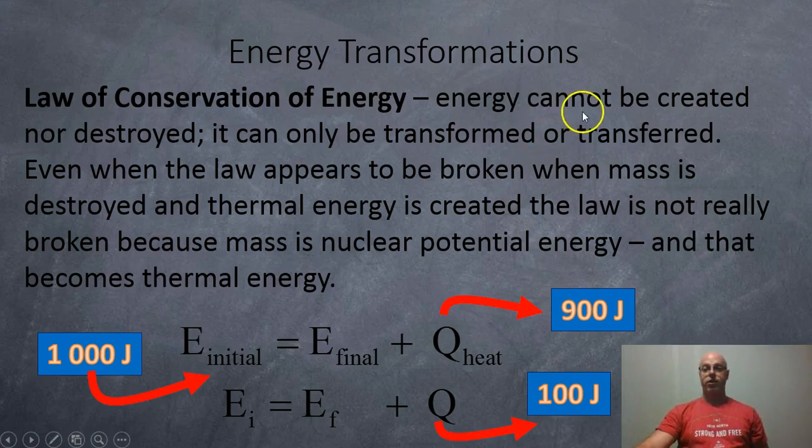It's a law of conservation of energy. It basically says that energy cannot be created nor destroyed. It can only be transformed or transferred from one place to another. Even when the law appears to be broken when mass is destroyed and thermal energy is created, the law is not really broken because mass is really just a form of nuclear potential energy and that becomes thermal energy, so it's just transferred.